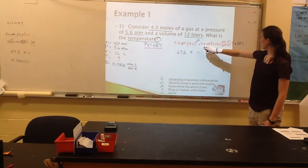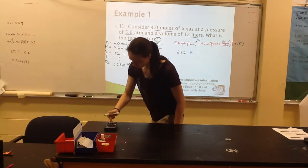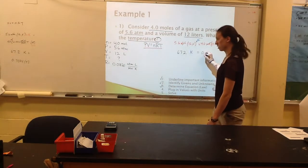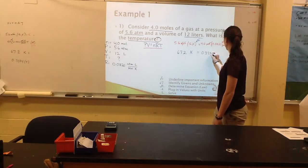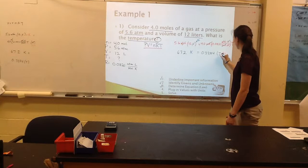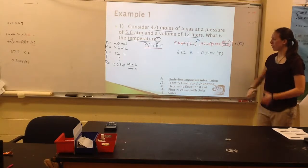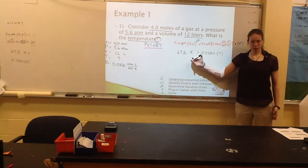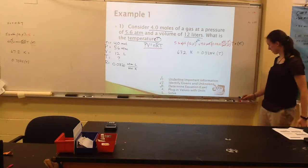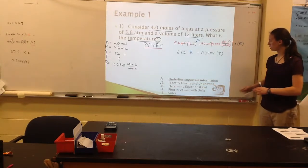I can multiply 4 times 0.0821. And what that gives me is 0.3284. And right now I've still got my variable of T for temperature. I'm almost there. I've got a number with a unit, I've got a number times the variable. The last thing I want to do is isolate my temperature. So I can take my 0.3284, divide it on this side.